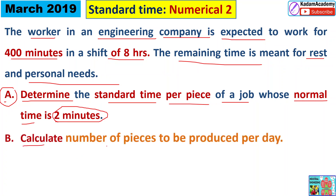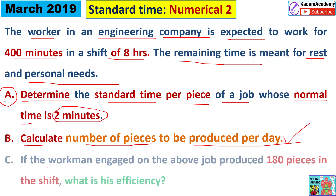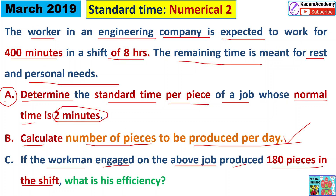Next, we have to calculate the number of pieces to be produced per day. Also, if a workman produces 180 pieces in the morning shift, what will be the efficiency of this worker? These are the three parts of the numerical we will solve one by one.